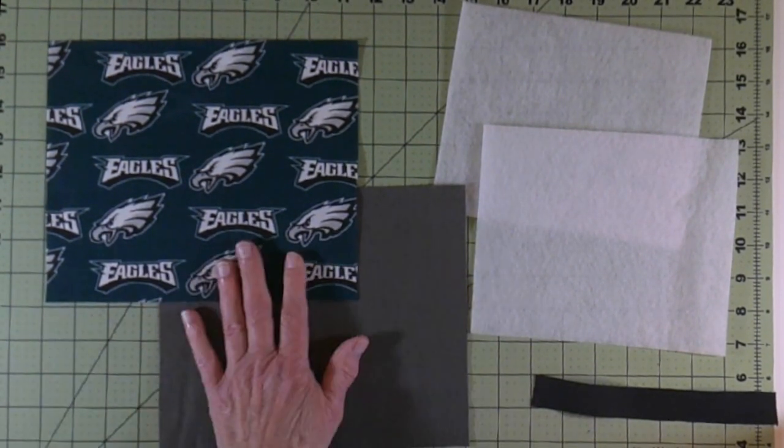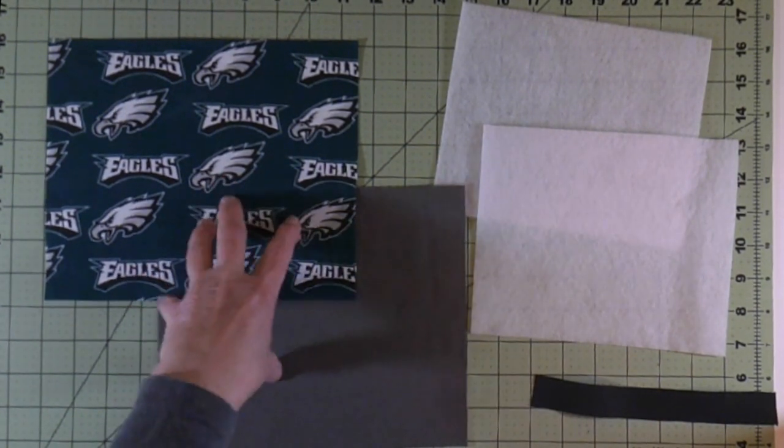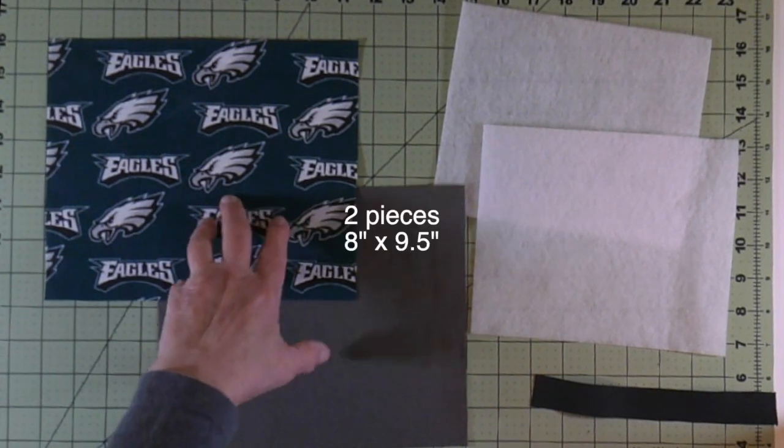You're going to need two pieces for the outer fabrics. Each one is going to be 8 inches by 9½ inches.